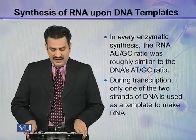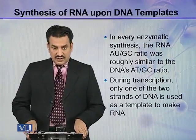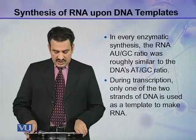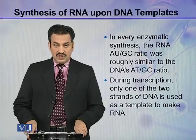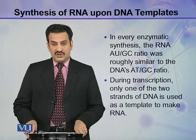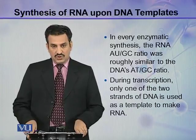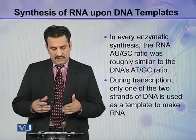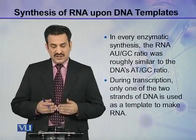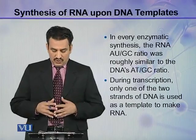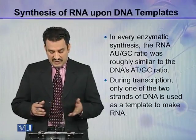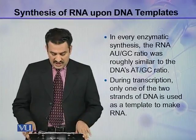In every enzymatic synthesis, the RNA AUGC ratio was roughly similar to the DNA's ATGC ratio. So, whatever amount of ATGC ratio was present in DNA, the same proportional amount of AUGC was present in the RNA.